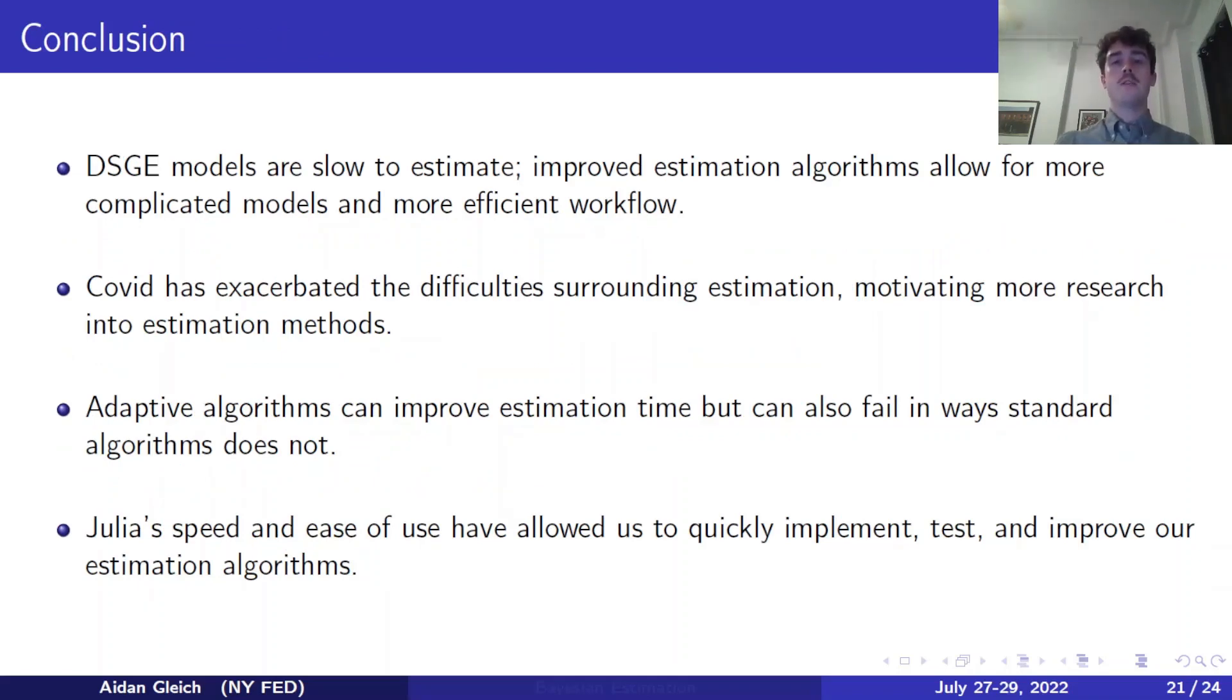In conclusion, DSGE models are slow to estimate. Improving estimation times and accuracy can allow for more complicated models to be used and allow for more efficient workflow, which is especially important when conducting policy analysis. COVID, both the data and the model changes, have exacerbated the difficulties surrounding estimation, which has motivated more research into estimation methods. Adaptive algorithms, we have found, can improve estimation time, but they can also fail in ways that standard algorithms do not. And throughout this entire research process, Julia's speed and ease of use has allowed us to quickly implement, test, and improve our estimation algorithms.